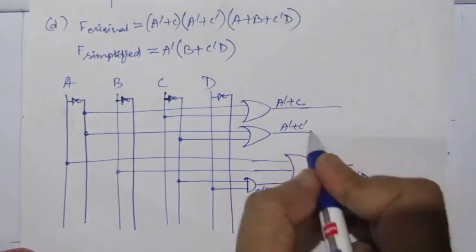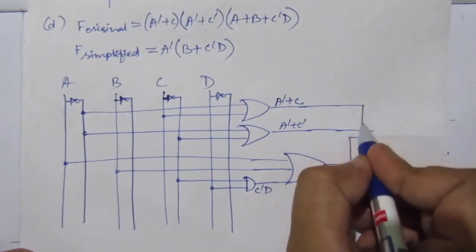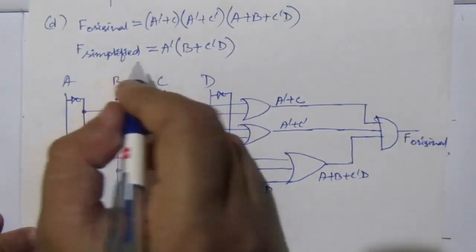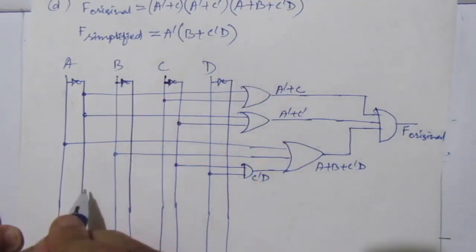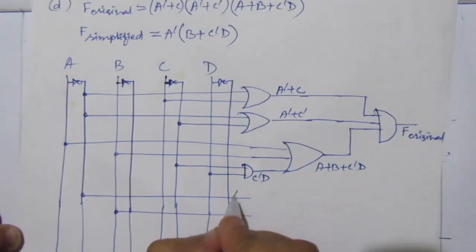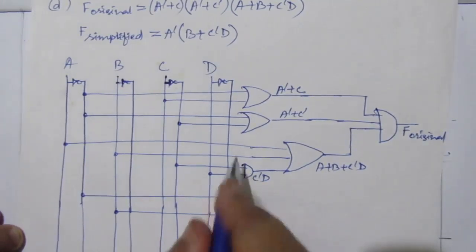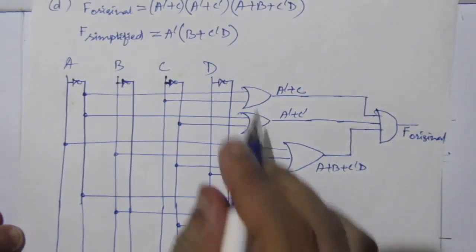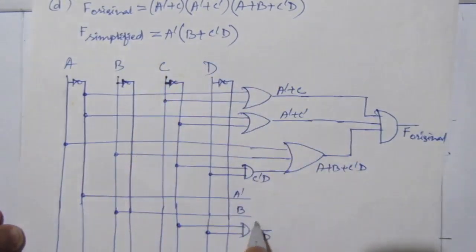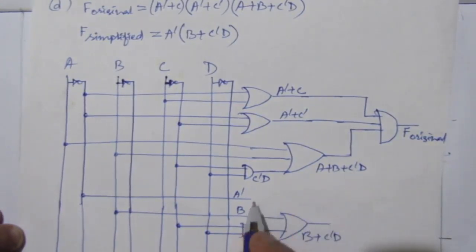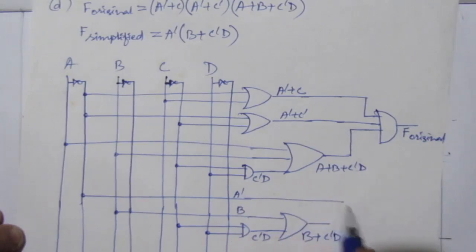For f simplified equal to ā·(b + c̄·d): first find c̄·d using an AND gate with c̄ and d. Then add b to get b + c̄·d using an OR gate. Then multiply with ā using an AND gate to get ā·(b + c̄·d), which is f simplified.